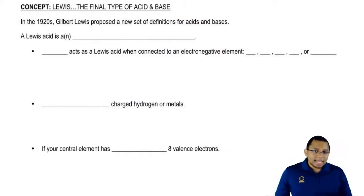In the 1920s, Gilbert Lewis proposed his own new definition of acids and bases. He basically did this almost at the same exact time as Bronsted and Lowry.